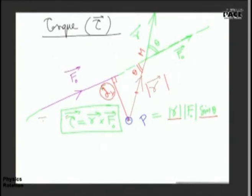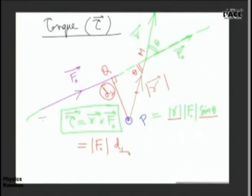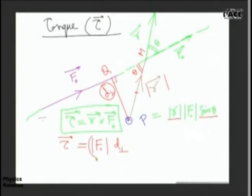In this triangle, PM sin theta equals PQ — so the torque equals the magnitude of the force F₀ times the perpendicular distance from the point about which we find the torque to the line of action of force. This is the magnitude, but torque is a vector, so the full expression is this magnitude times N-cap, where N-cap is the unit vector in the direction of torque.